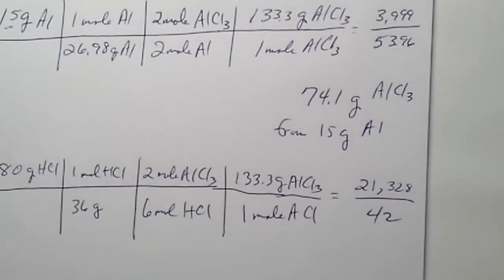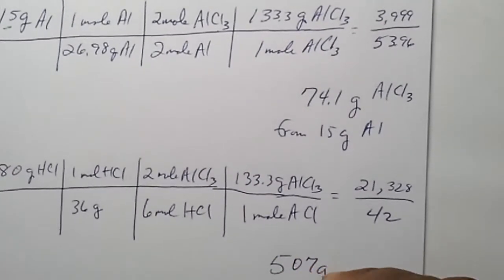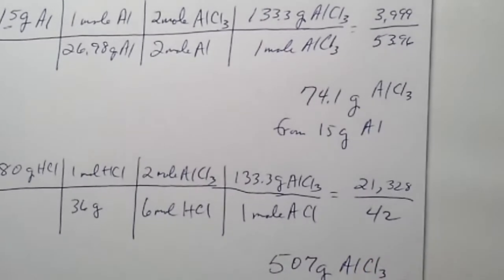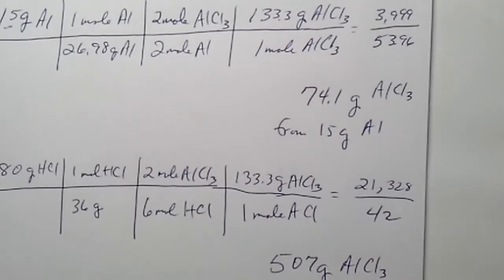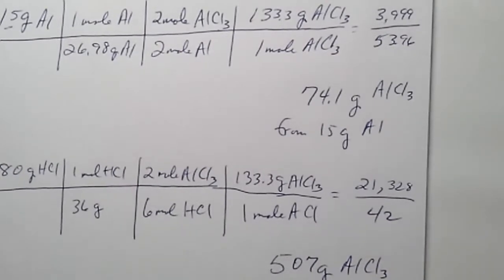And so, if we divide twenty-one thousand three hundred and twenty-eight by forty-two, we'll get five hundred and seven grams of aluminum chloride from 80 grams of hydrochloric acid.